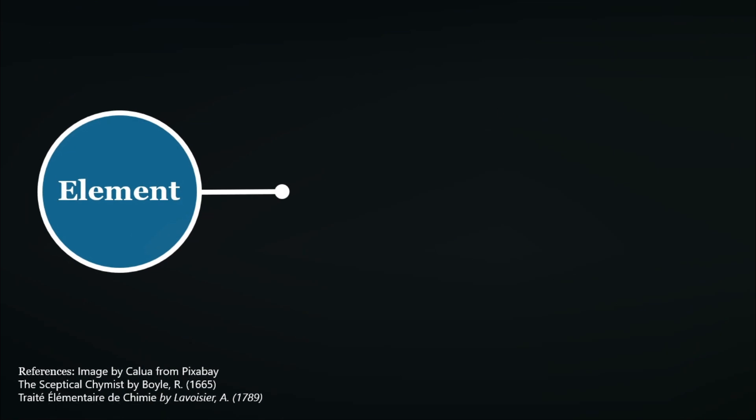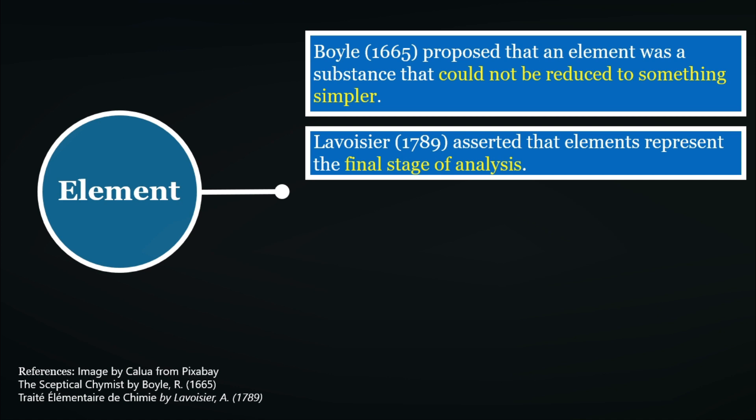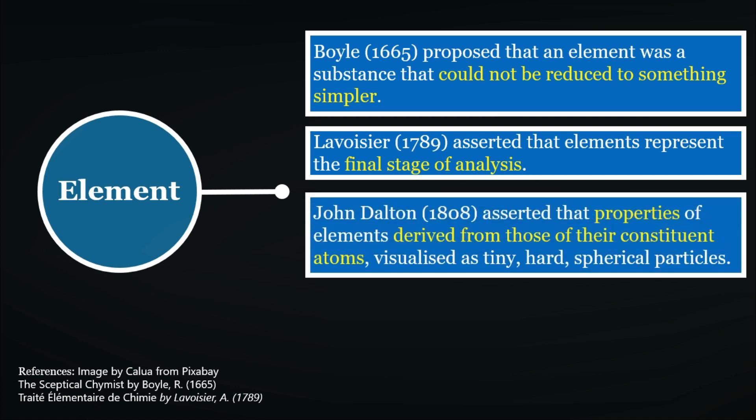One definition of an element is proposed by Robert Boyle, saying that elements are substances that could not be reduced to something simpler. To add weight to this, Lavoisier asserts that it is the final stage of analysis. John Dalton brought something more fundamental to Lavoisier's definition when he asserted in 1808 that the specific properties of elements are derived from those of their constituent atoms. This is connected to what we established a while ago: the outermost orbit, atomic structure, electrical property. In other words, the electrical property of a material is derived from the structure of the constituent atom.